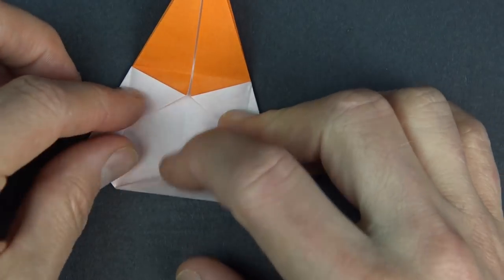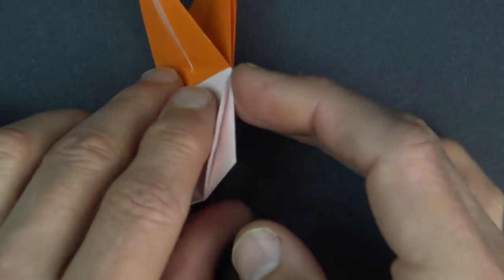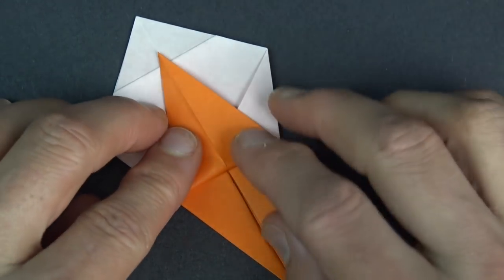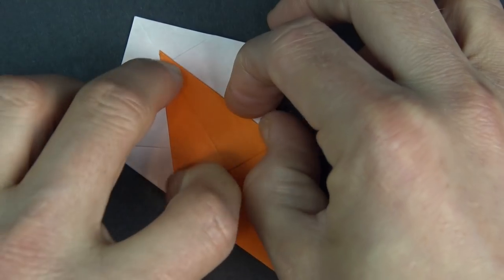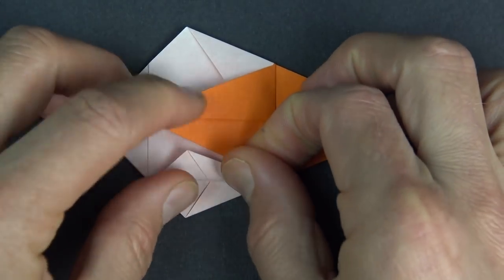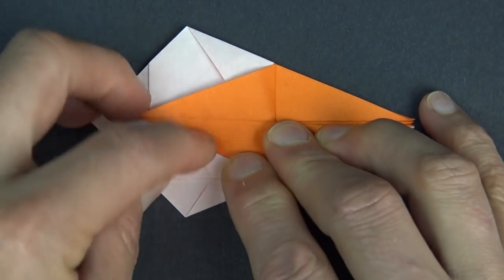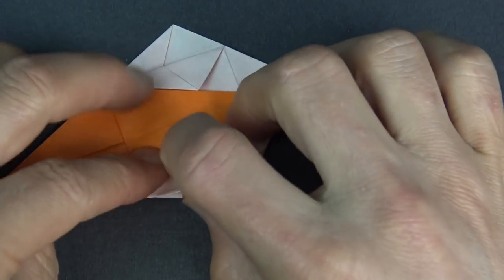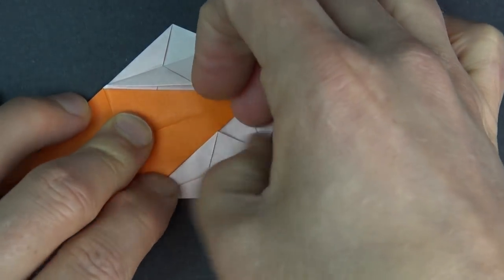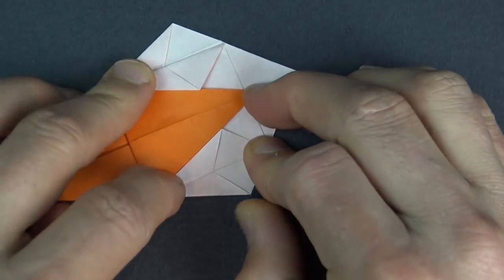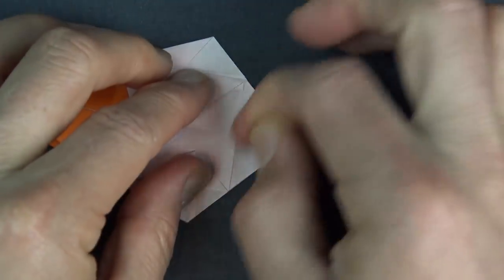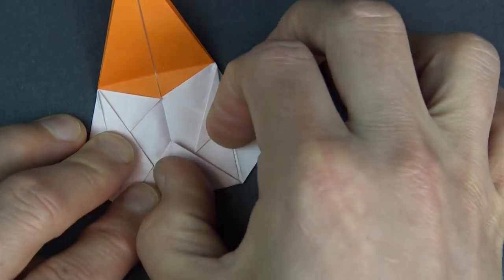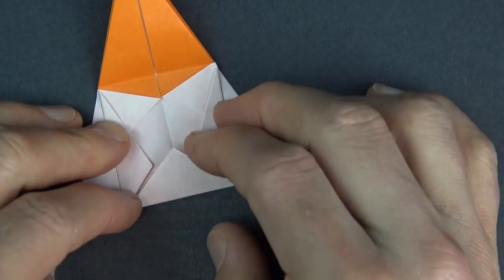And unfold these three flaps and turn over and repeat on this side. Erase this crease and fold it up on the side and unfold.